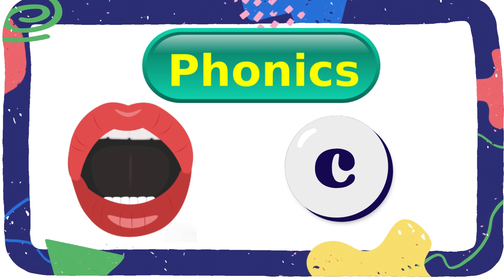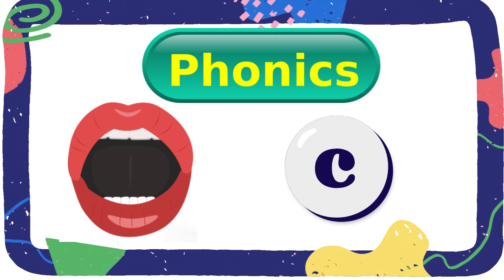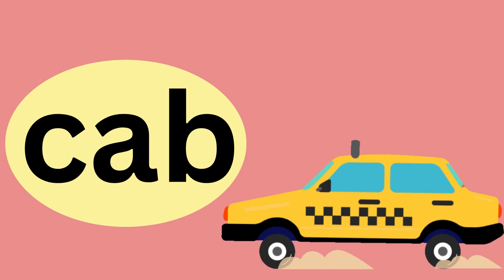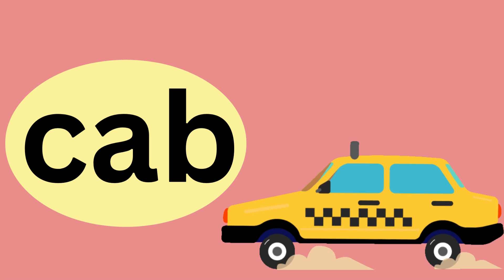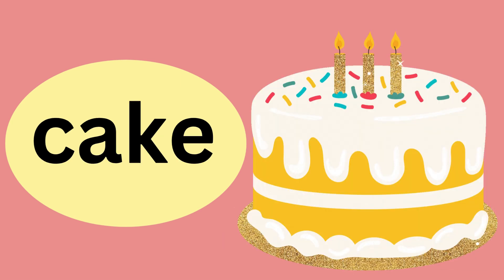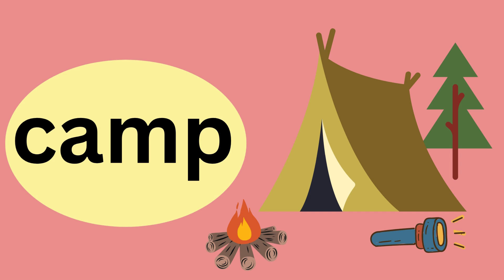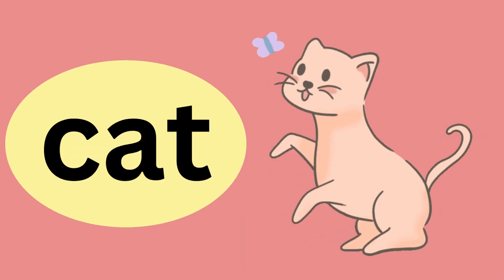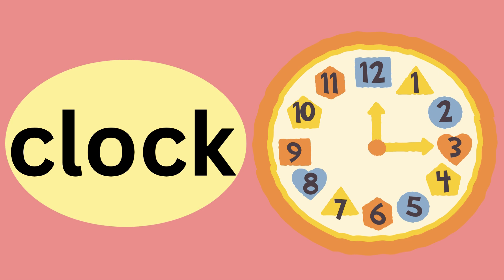Phonics. This week our phonics letter is C. C says k. Let's look at words that start with C. Cab — we sound it out as k-a-b. C says k. Cake — we sound it out as k-a-k. C says k. Camp — we sound it out as k-a-m-p. C says k. Cat — we sound it out as k-a-t. C says k. Clock — we sound it out as k-l-o-k. C says k.